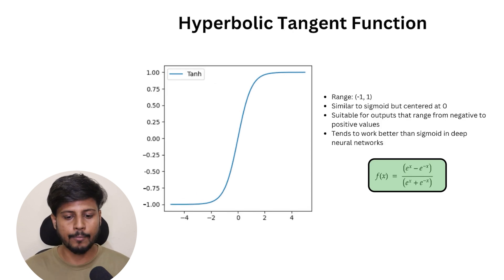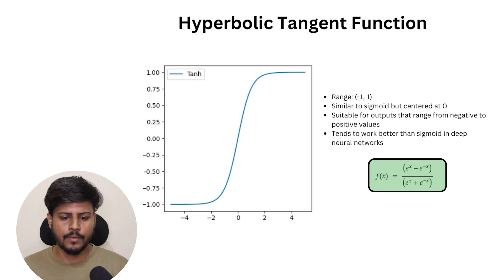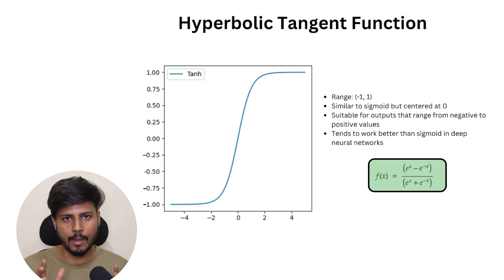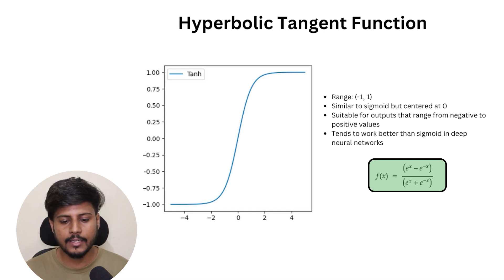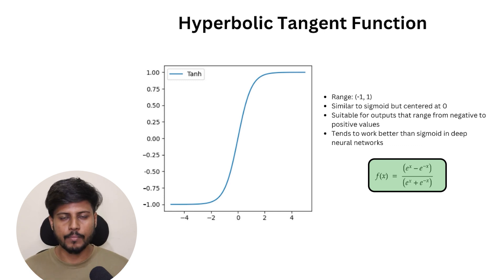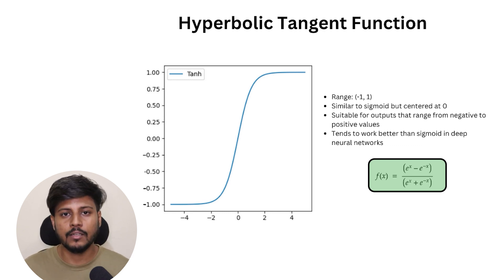The next type is the hyperbolic tangent activation function (tanh). It is similar to the sigmoid function, but it maps input values between −1 and 1, whereas sigmoid maps between 0 and 1. This activation function is basically used in hidden layers so that we can recognize complex patterns and complex relationships from the data very easily when training our neural network.